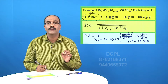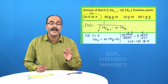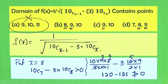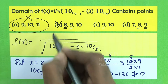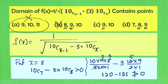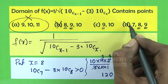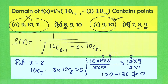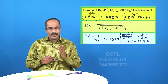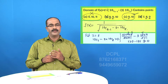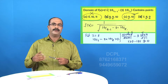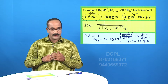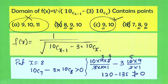Since x cannot equal 8, option B is ruled out and option D is also ruled out. Only option C is correct. This is one of the easiest ways to approach the problem — rather than the traditional method, testing key values from the options is much simpler.